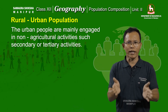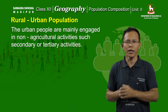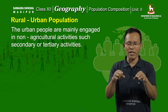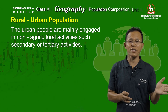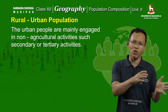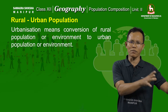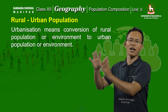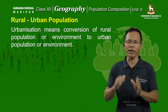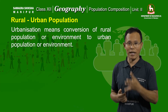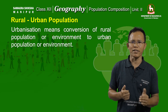In this way, we can differentiate the population of the world, India, and Manipur into rural and urban based on place of residence. With the passage of time, the percentage of urban population increases by a process called urbanization — the conversion of rural environment or rural population to urban population or urban environment. Whenever urbanization takes place, three types of changes occur: physical change, demographic change, and economic change.